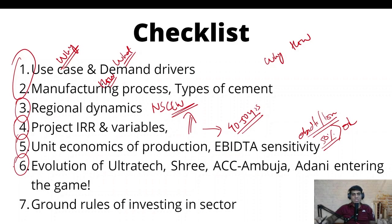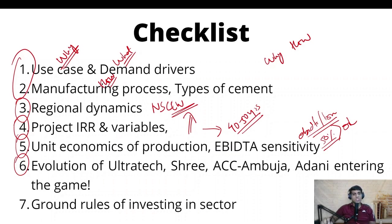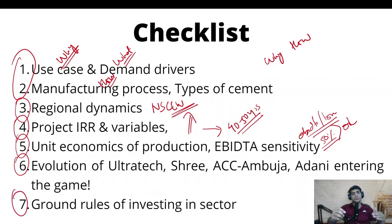Then we are going to cover three of the largest cement players — Ultratech Cement, Shree Cement, and ACC Ambuja. All three combined make up more than around 40% of India's overall capacities. We are going to look at how Adani coming into the picture changes the game and what are the key implications of that event. Finally, we are going to devise some ground rules for investing in the sector — primarily what are the two or three key important metrics that drive the stock in this particular sector.